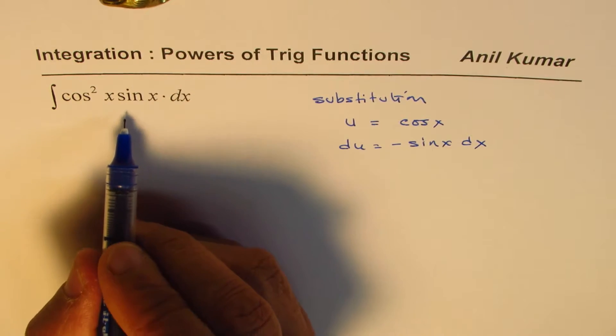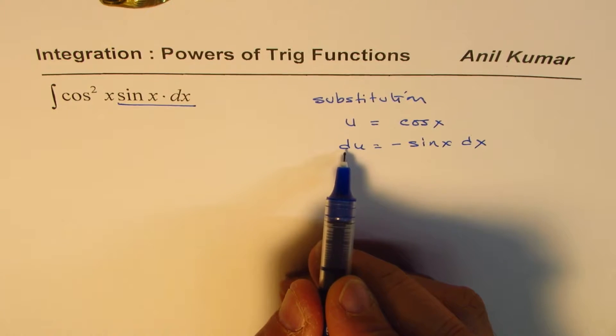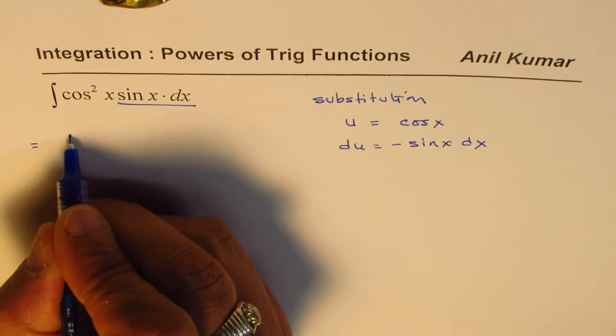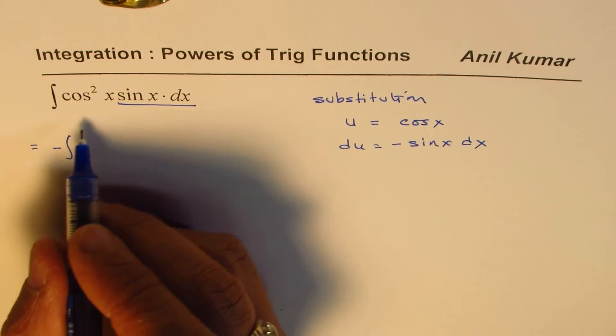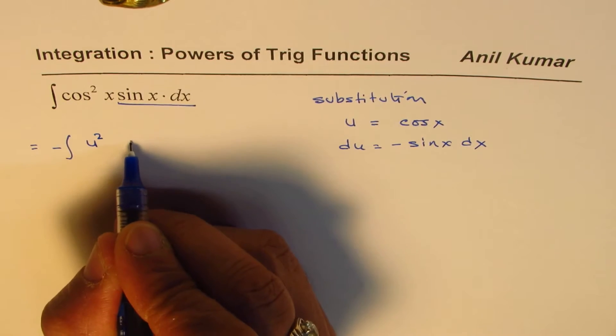So we can now substitute this with minus du and cos²x with u². So we'll write this question as integral of minus—I'm taking this minus outside. Instead of cos x, I'm writing u² and then we have du.